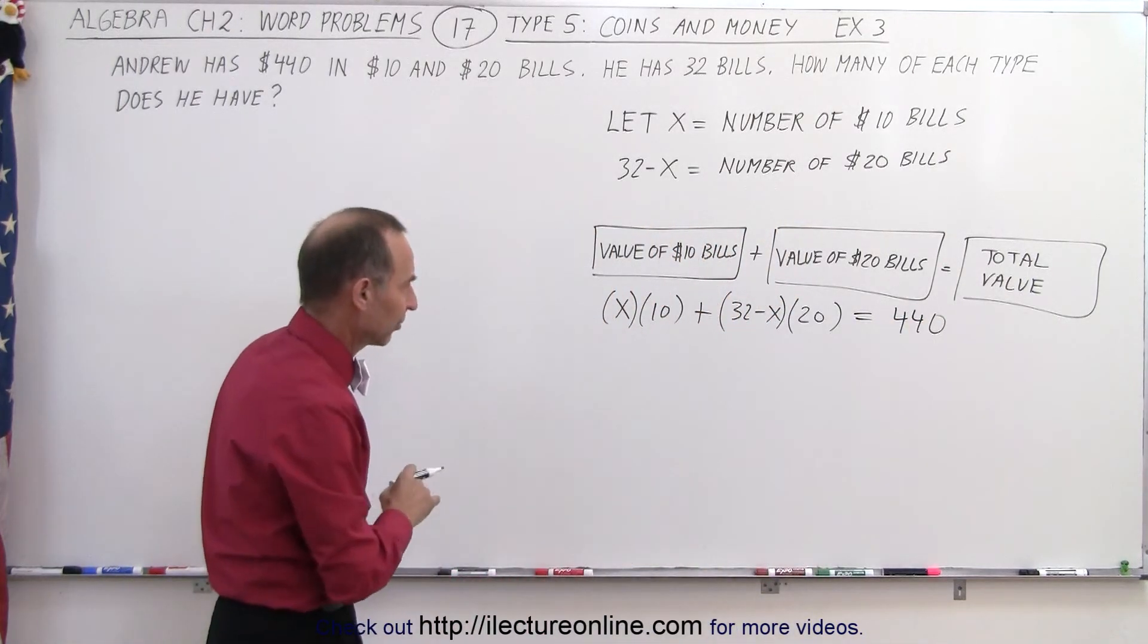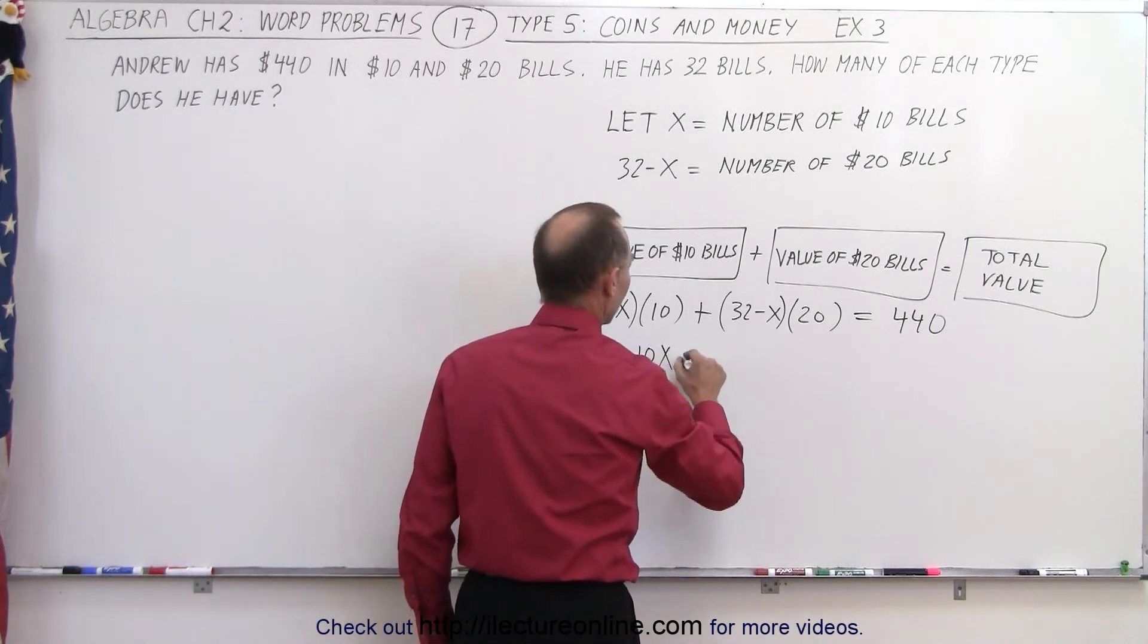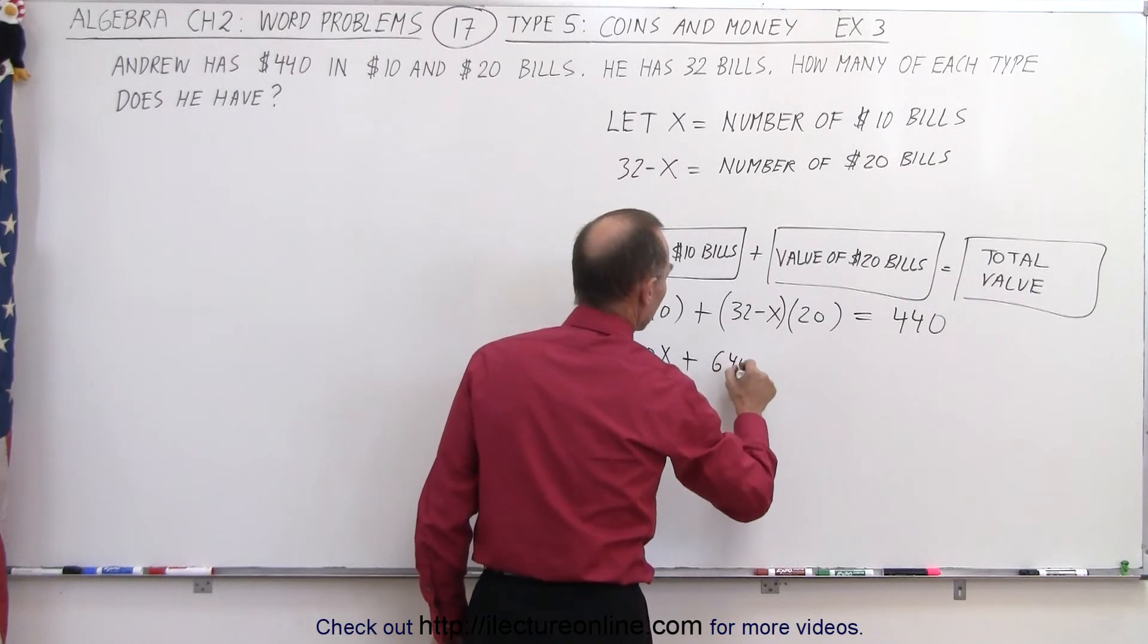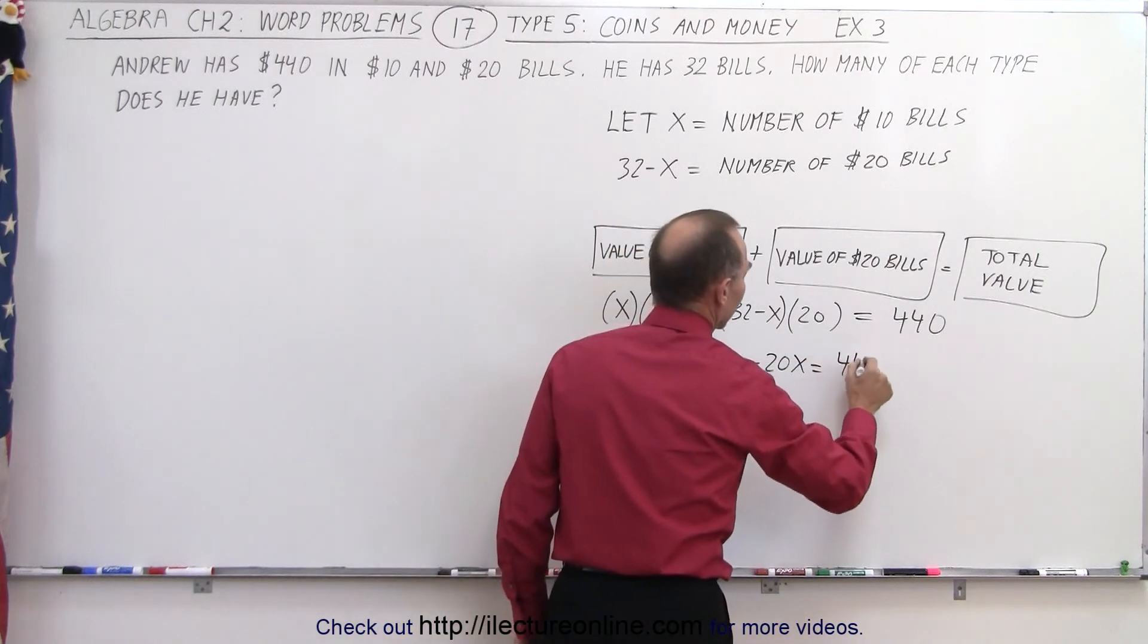Now we can solve this for x. So first we want to get rid of the parentheses. So 10x plus, that would be $640 minus $20x is equal to $440.